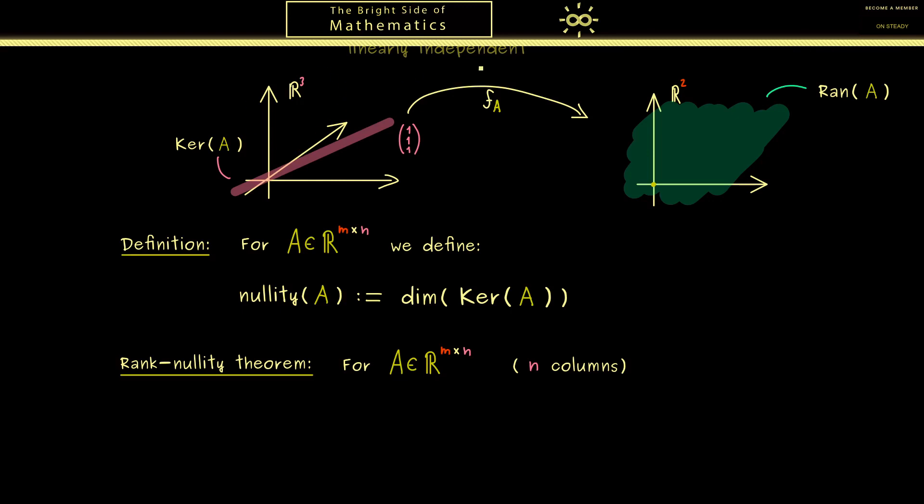So for example here, if we map this R^3 into something that is only two-dimensional, we lose one dimension. And now the thing is, what we lose, we have to find in the kernel of A. So in this example here, we have a one-dimensional subspace that has to collapse to the origin. Okay, and now we can put this into a general formula. So we add two dimensions. So we add the nullity and the rank of the matrix. So we have the dimension of the kernel on the left hand side and the dimension of the range on the right hand side. And together they have to be equal to the dimension we put in on the left hand side. So in the matrix picture, this is the number of columns we have.